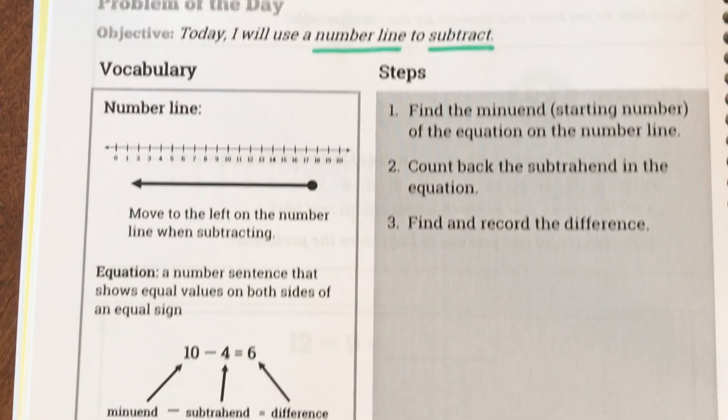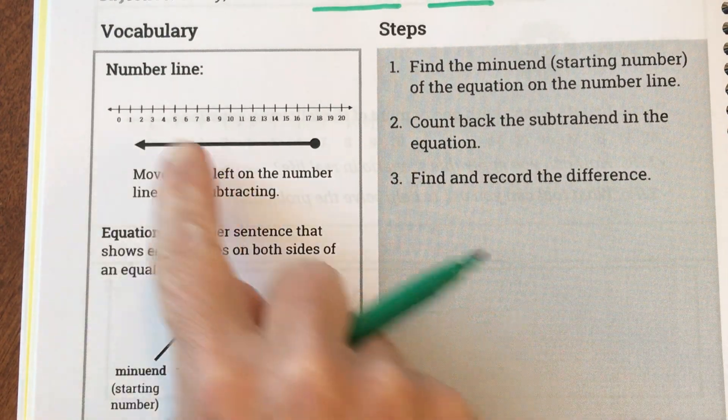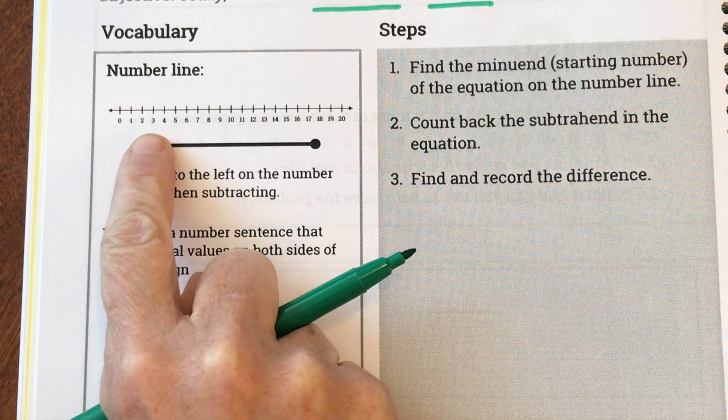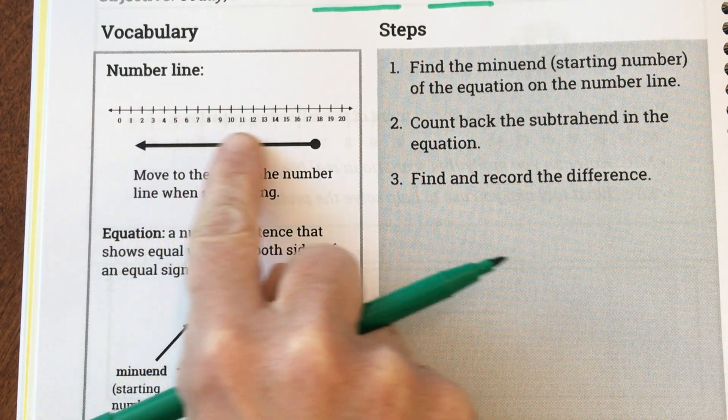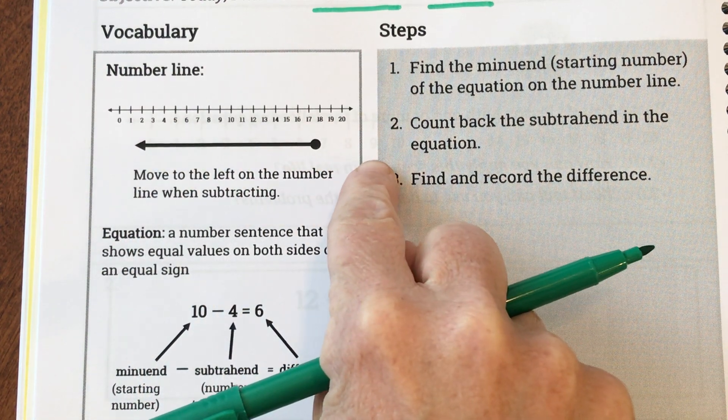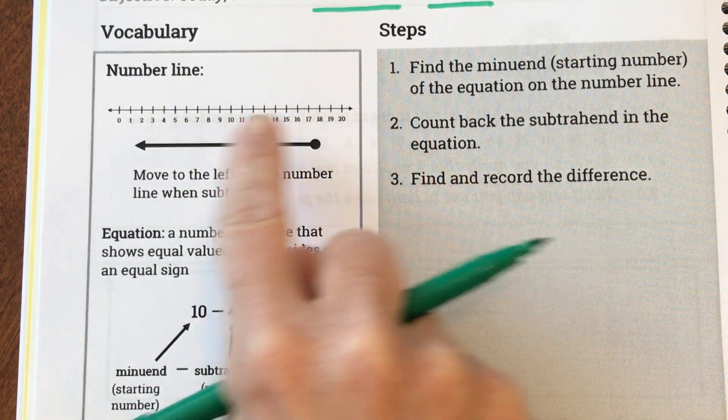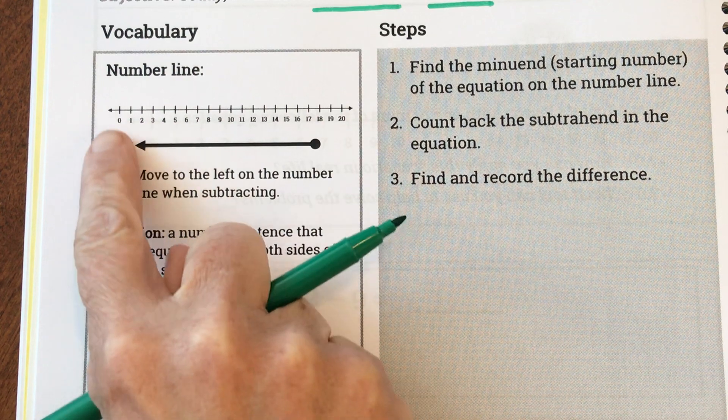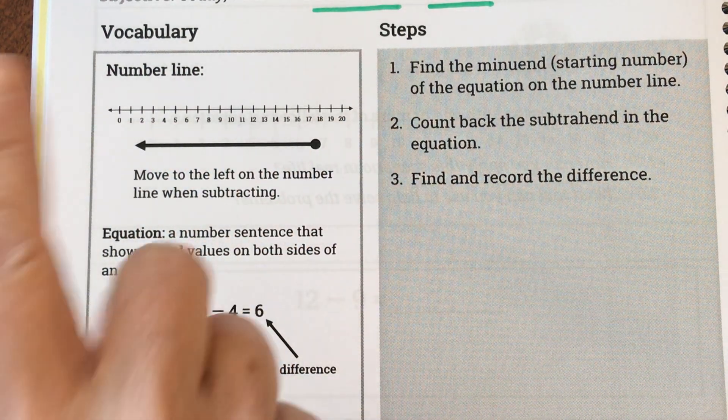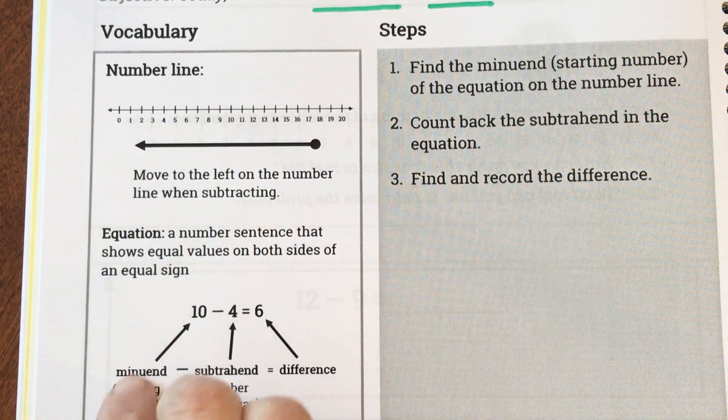So we're going to be using a number line and we're going to be subtracting or taking away using that strategy. Let's look at our number line first. Here is a picture of a number line and notice it goes zero, one, two, three, four, five, and it keeps counting all the way up to 20. Not all number lines look exactly the same, but what happens on a number line is they always start with a smaller number and they grow. It's like when we count we go one, two, three, that's how a number line works.